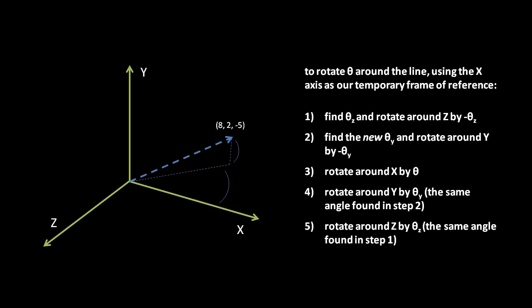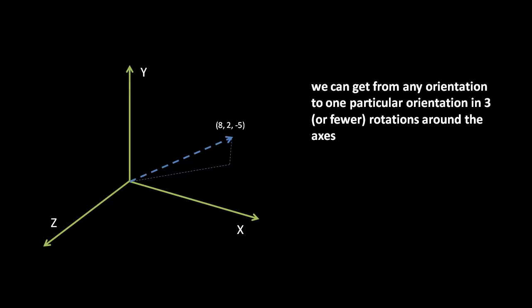So that's how we can rotate around an arbitrary axis. Again, using the x-axis as our temporary frame of reference is an arbitrary choice — we just as well could have used the y or z-axis. Also recall that for whichever axis we choose, we actually have four possible pairs of rotations that will make the line overlap the chosen axis. This gives us a total of 12 possible combinations of rotations around x, y, and z that allow us to rotate around an arbitrary axis through the origin.